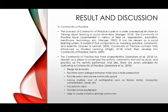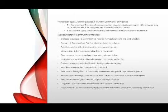Community of practice has three characteristics: domain as a place to undertake the activity, community that acts as actor, and practice as the activity performed. There are seven principles for cultivating a community of practice: design for evolution; facilitate open dialogue between inside and outside perspectives; provide public and private community space; use multiple levels of participation such as thread starter, moderator, commentator, viewer, etc.; focus on value; contain similar excitement; and create a rhythm amongst the community. Community of practice offers a perspective about sharing knowledge differently from the traditional approach, focusing on the agility of social space and the variety of every participant's experience.